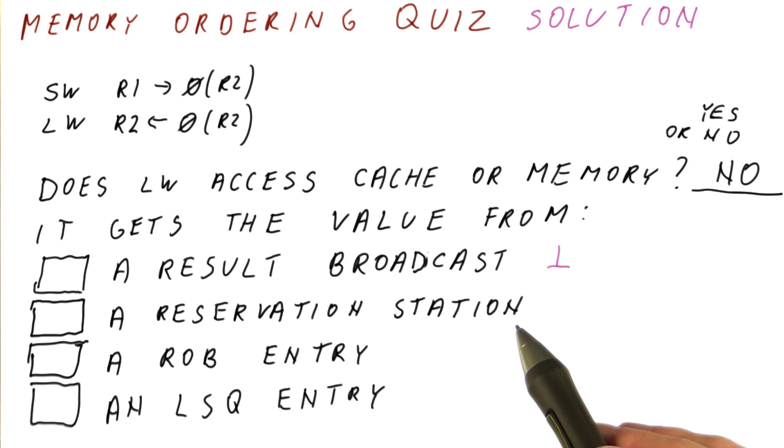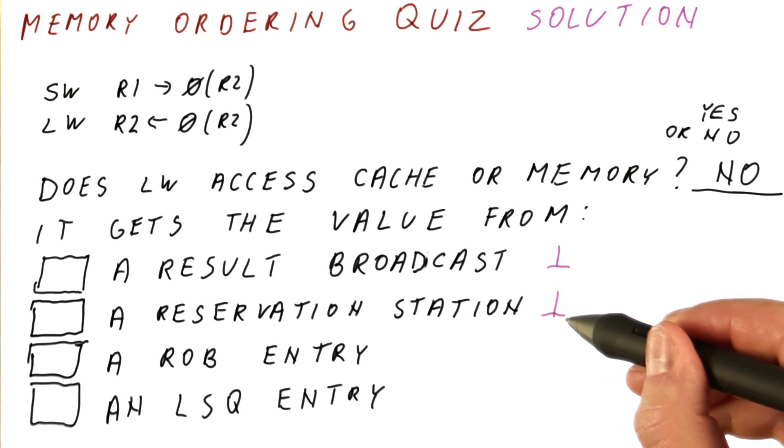A reservation station? Reservation stations never provide results to subsequent instructions - they only keep values captured for the current instruction. The store doesn't even have a reservation station, so this is definitely not correct.